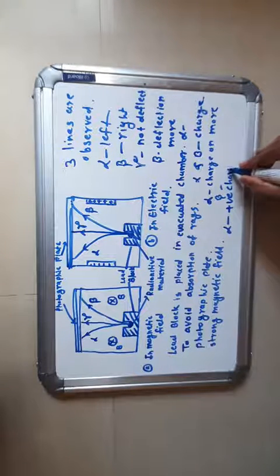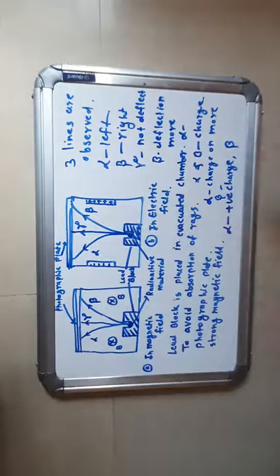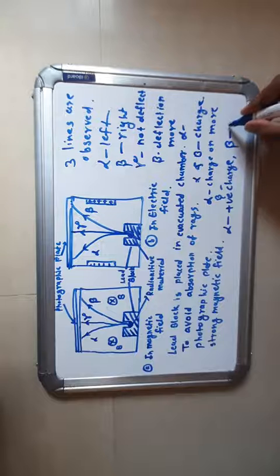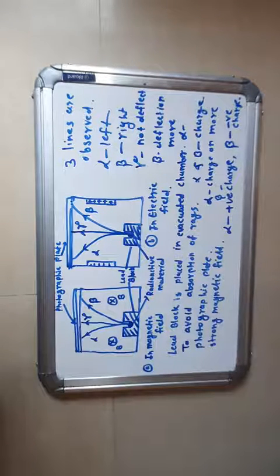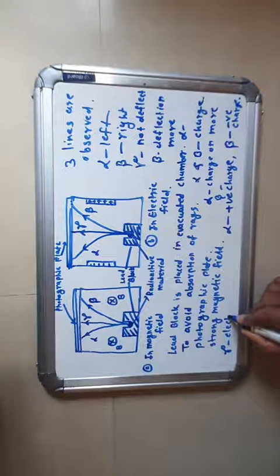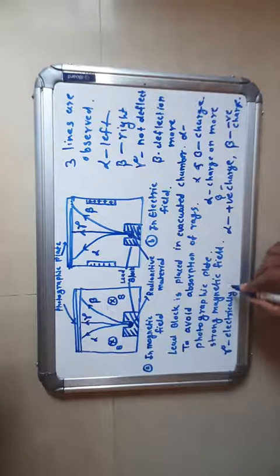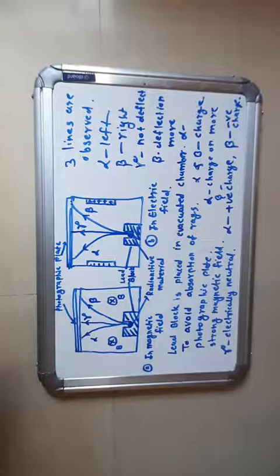From this, it is concluded that alpha particles are positively charged, beta particles are negatively charged, and gamma rays are electrically neutral. This is the conclusion of this simple experiment.